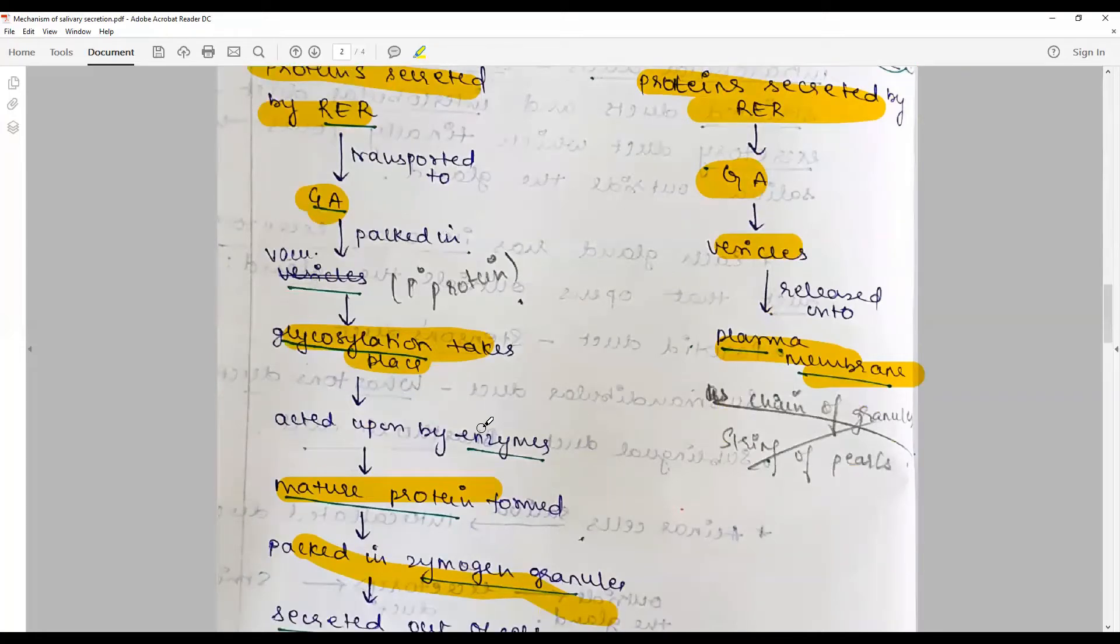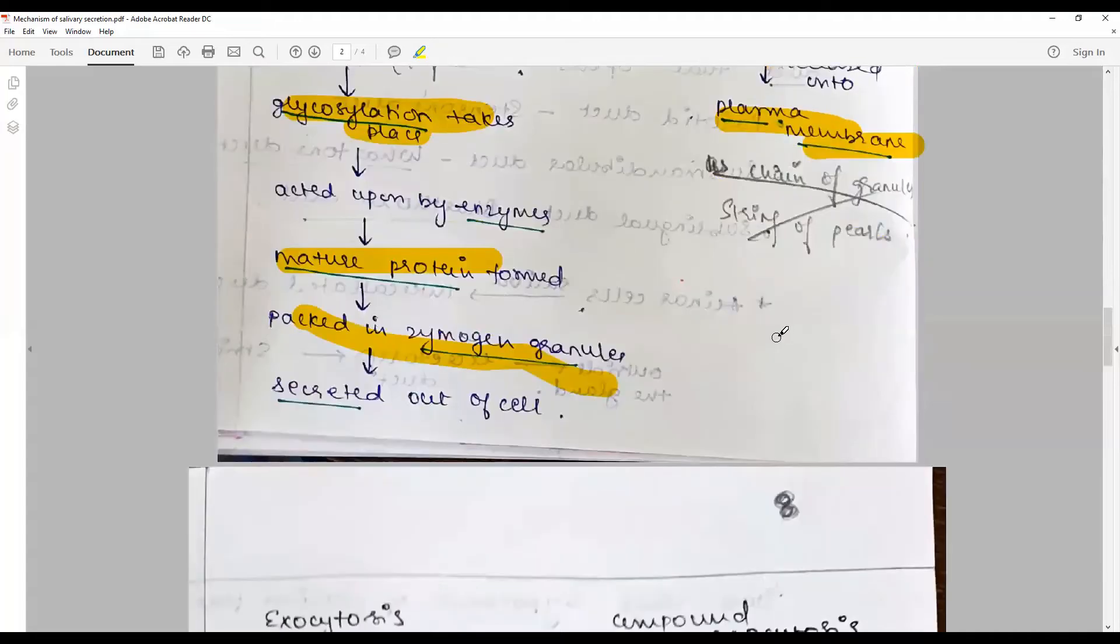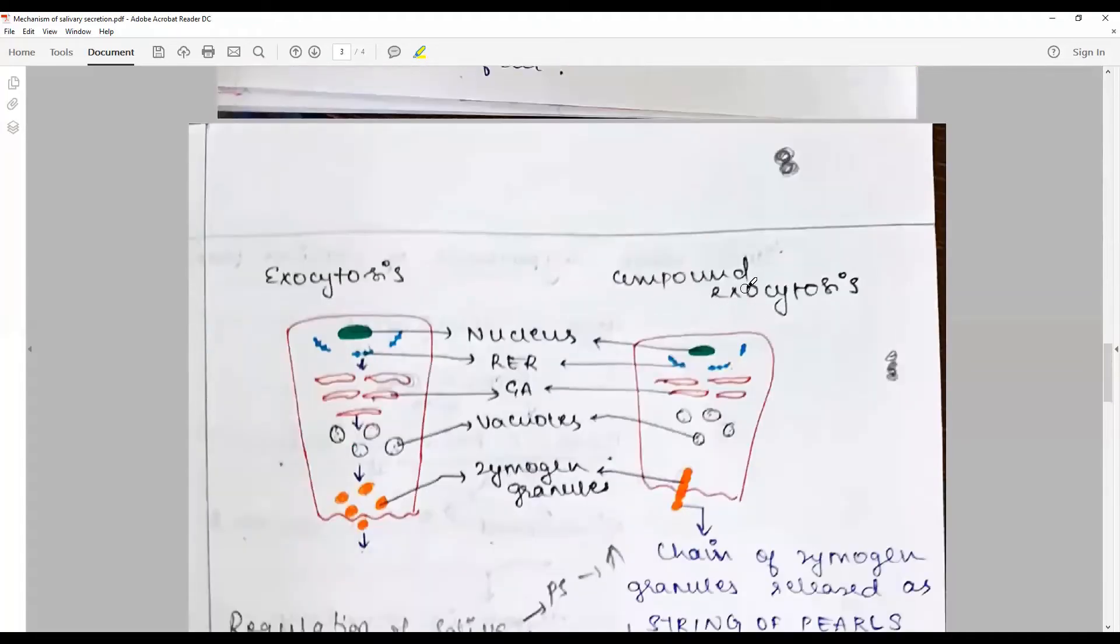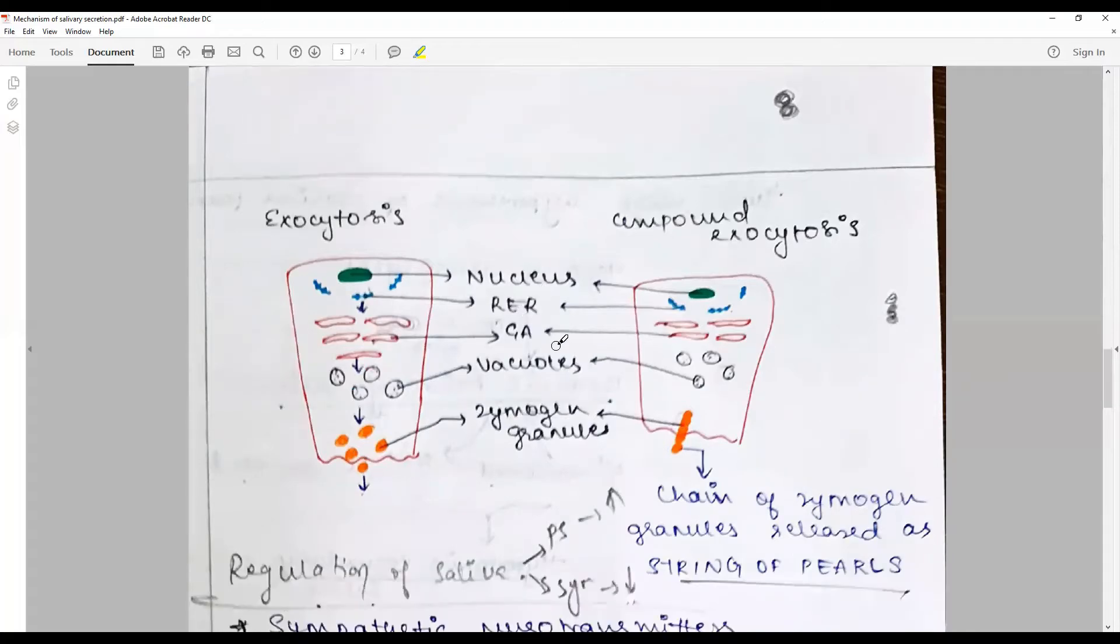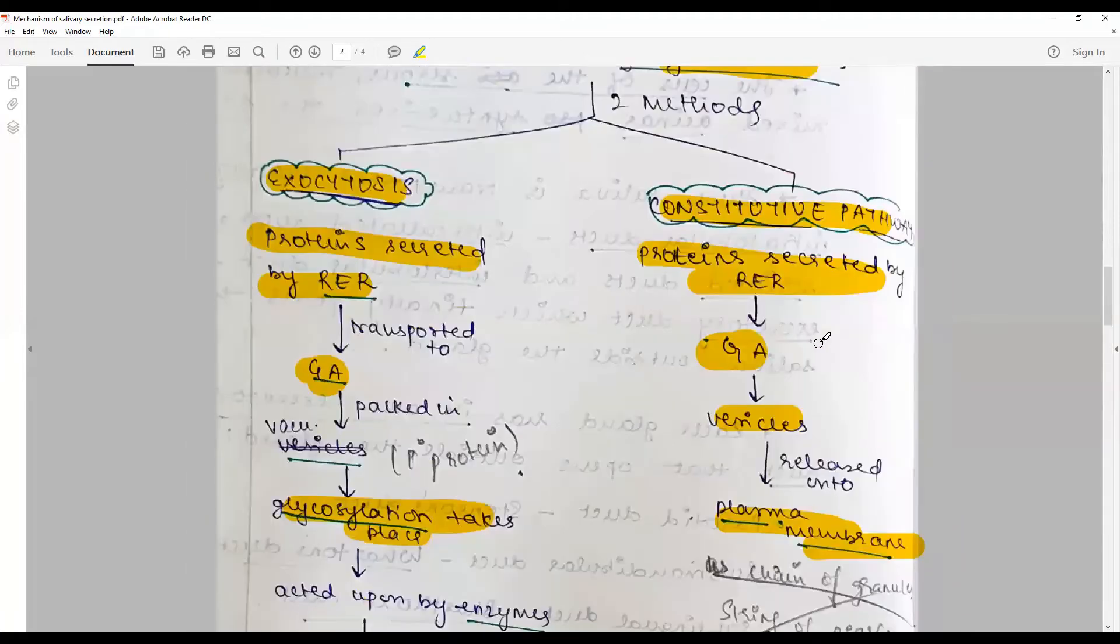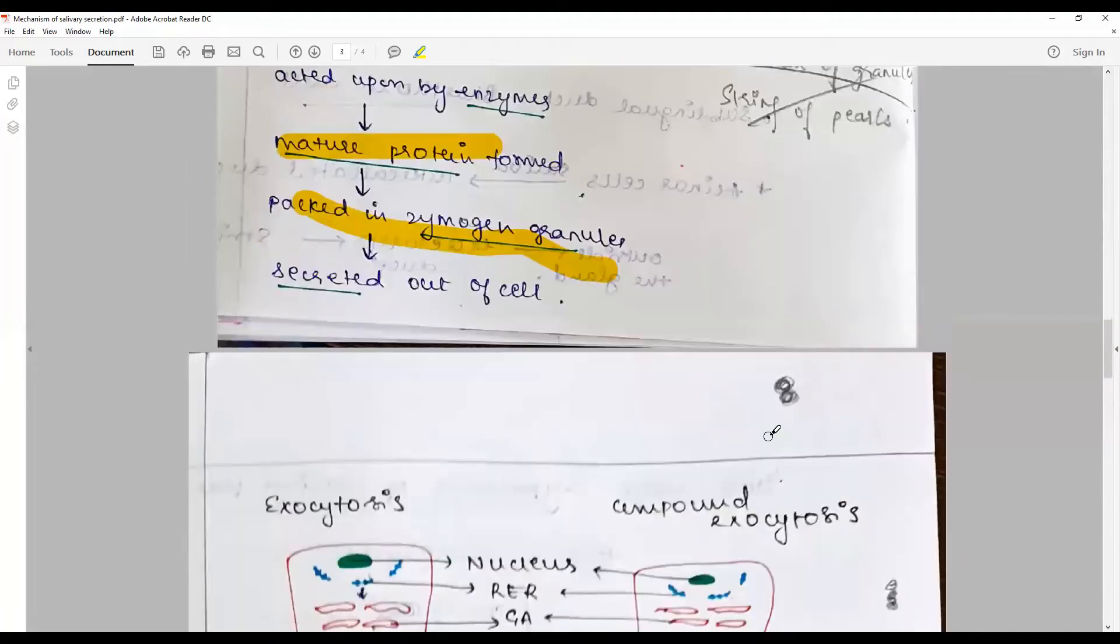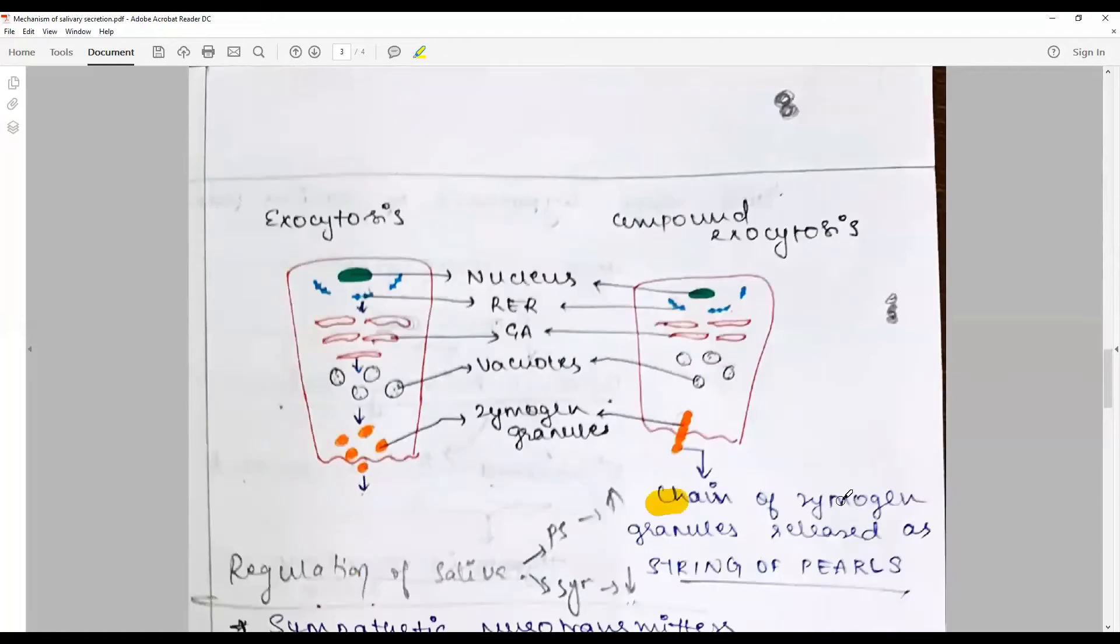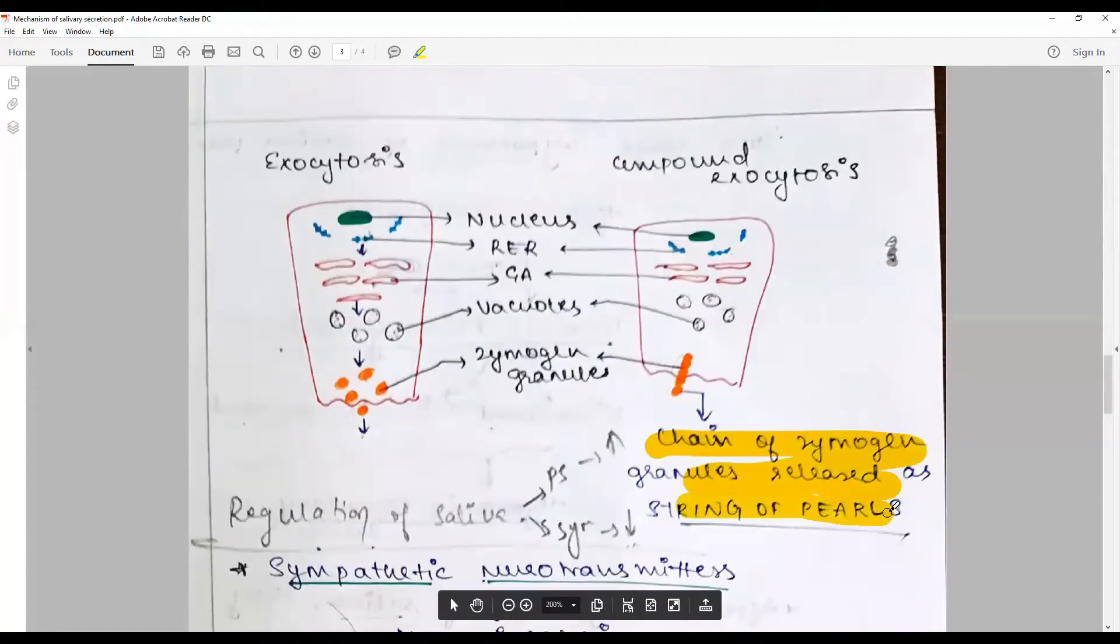The time difference is the major thing here. In exocytosis, there is glycosylation and the protein is formed in an inactive form, then acted upon by enzymes to form the mature protein. In constitutive pathway, it's straight protein formation. In compound exocytosis, you see the difference in the presence of vacuoles and nucleus histologically. Here, you find a chain of zymogen granules released subsequently in the active phase as a ring of pulse.